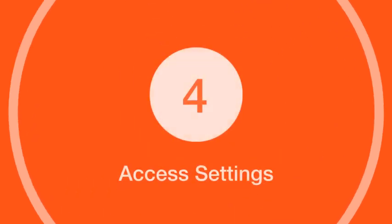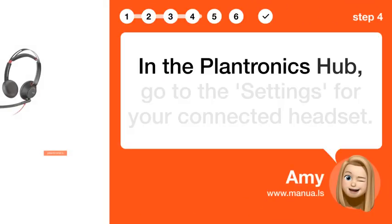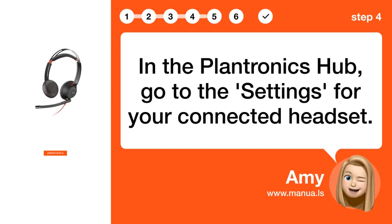Step 4: Access Settings. In the Plantronics Hub, go to the settings for your connected headset.